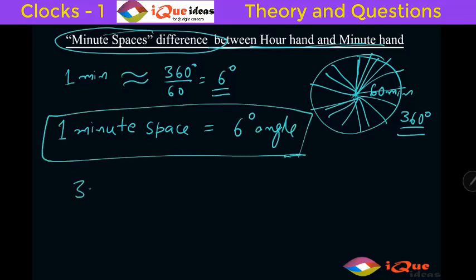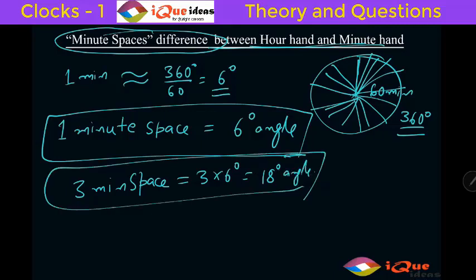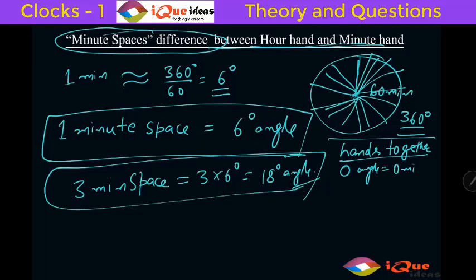So if I say 3 minute spaces, that will be equal to 3 into 6 degrees, which is 18 degrees. Now when I say the hands are together, what is the minute space difference between them? The hands together means the angle is 0. So 0 angle would mean 0 minute space.